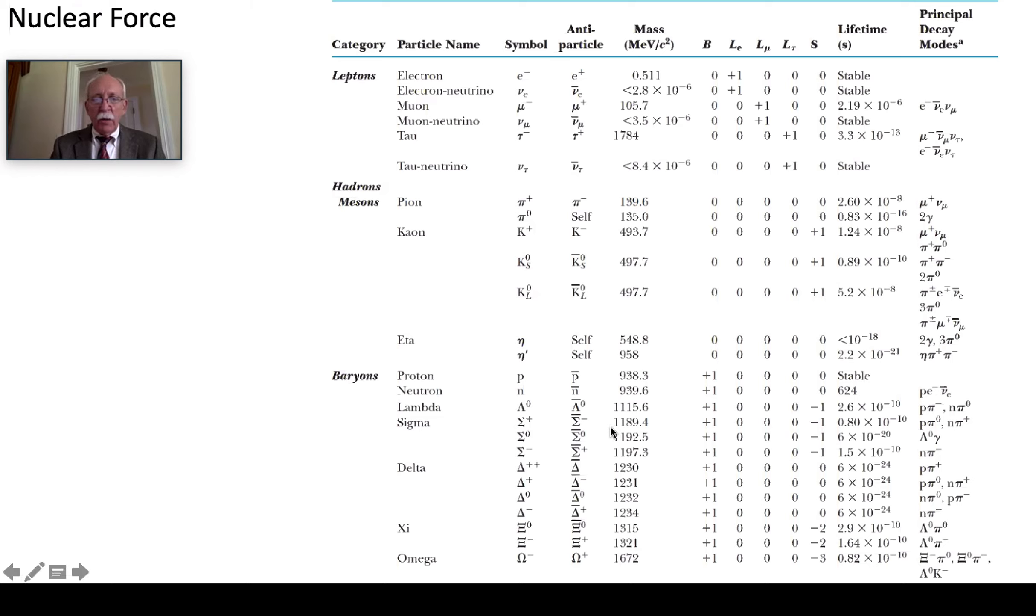All right there are quantum numbers associated with these things that you might find peculiar but baryons have baryon quantum numbers. And leptons have their own separate little fiefdom of quantum numbers. So the electrons and the electron neutrinos have their lepton numbers and their antiparticles are minus ones. And the muon and the muon neutrino have their muon lepton numbers and the tau is the same way.